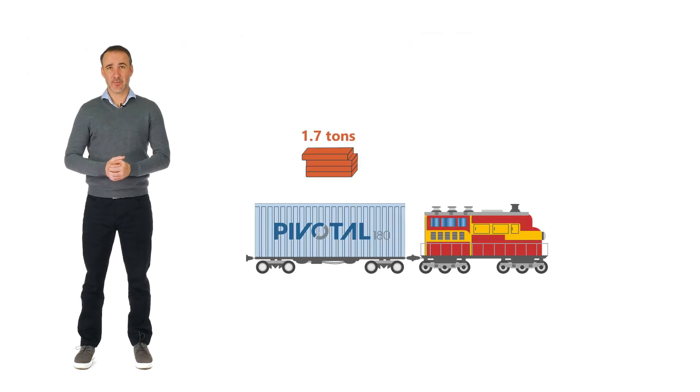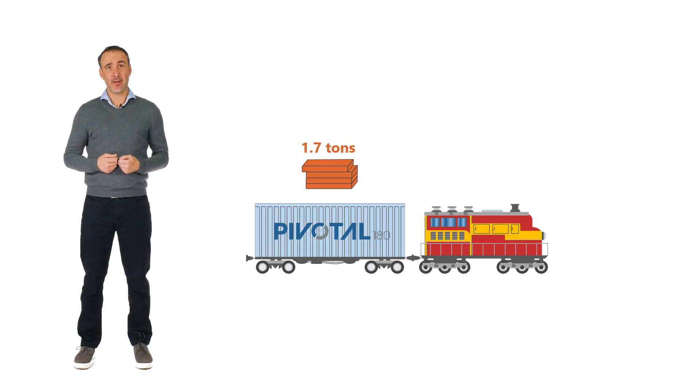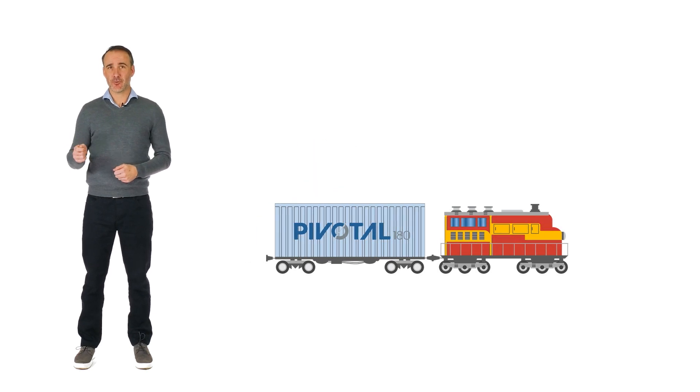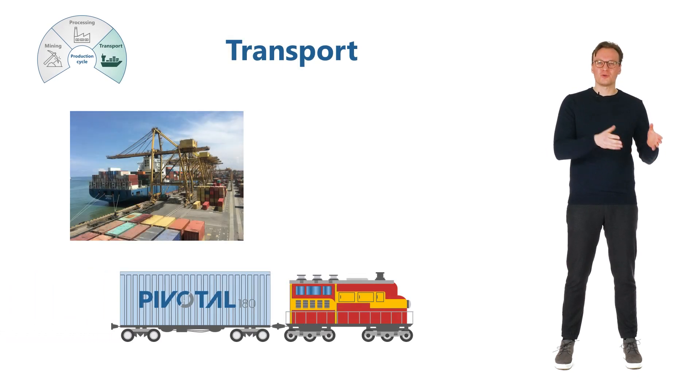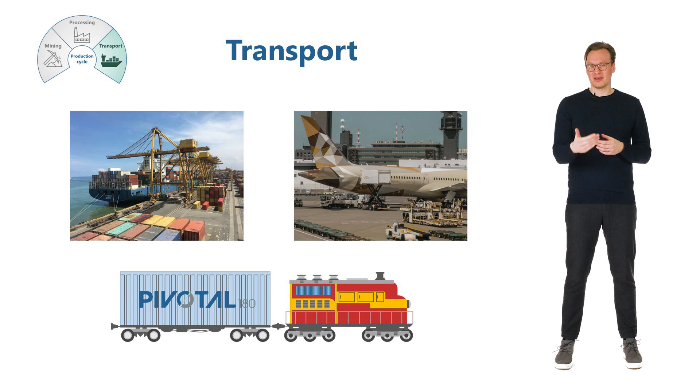These 1.7 tons of copper are then transported to a buyer, often leaving the site by train, and then loading the copper onto a cargo ship or an airplane to the buyer.